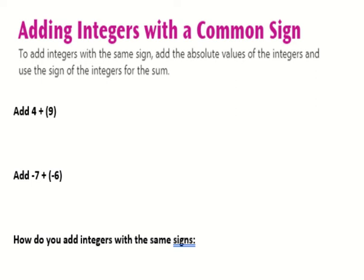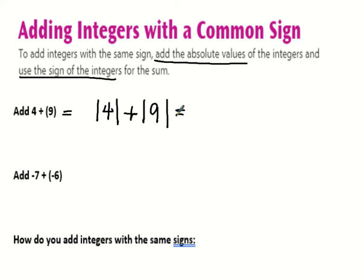Next page: adding integers with a common sign. To add integers with the same sign, add the absolute values of the integers and use the sign of the integers for the sum. Remember again, absolute value is not negative or positive. All you're talking about is the distance from 0 on the number line or how many spaces away from 0. If I want to do this using absolute value, I could say add the absolute value of 4. Remember the absolute value symbols are these two lines on the side of the number. And the absolute value of 9. What is the absolute value of 4? How many spaces is 4 from 0? It's 4 spaces. Plus absolute value of 9. How many spaces from 0 is 9? 9 spaces. So add those together and what do you get? 13.